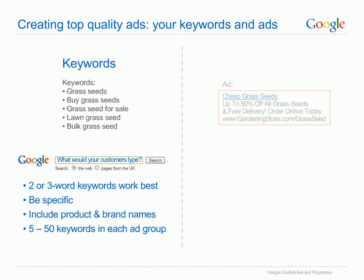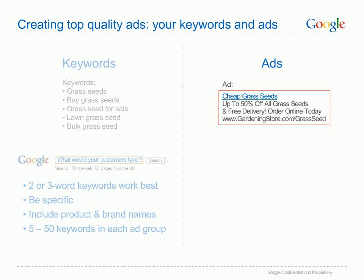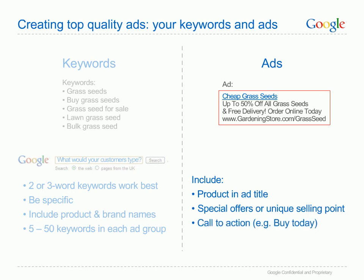When writing your ads for each ad group, remember to include a few important things. Include the product you're promoting in the title of your ad text. Include any special offers or promotions – what will make your ad stand out from your competitors? Include a call to action – what do you want your potential customers to do on your site? Here, we want them to order online today. And make sure the destination URL of your ad is the right page of your site and not simply your home page. Here we want to take users to the grass seeds page of the site, so a user looking to buy can do so quickly and easily. If you want even more tips, there are other webinars you can watch that will take you through more detail.